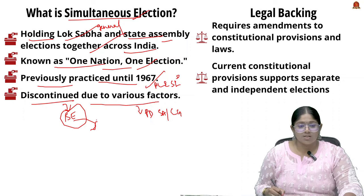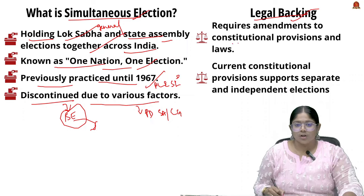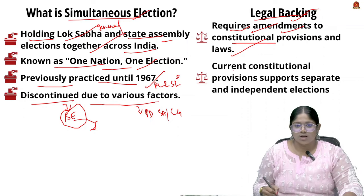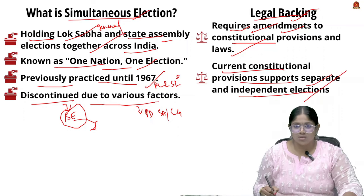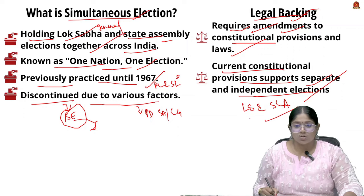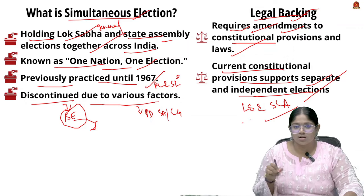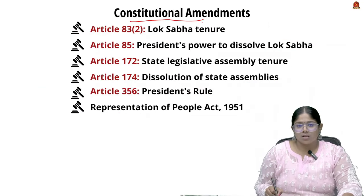When looking into the constitutional provisions and laws related to simultaneous elections, a lot of amendments are required. The current constitutional provisions support separate and independent elections for both the Lok Sabha and state legislative assemblies. To have simultaneous elections, we need modifications or amendments in several constitutional provisions. Let us look at the constitutional articles related to elections and the required changes.